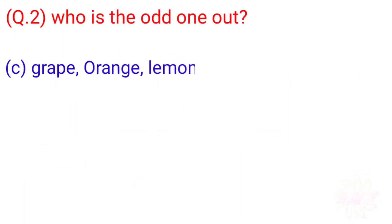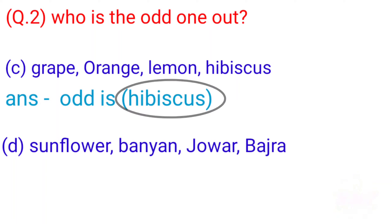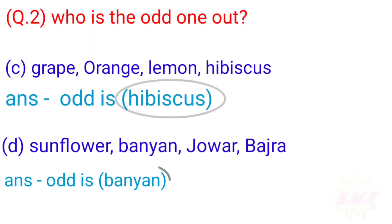C: Grape, Orange, Lemon, Hibiscus. Answer: The odd one is Hibiscus. D: Sunflower, Banyan, Jowar, Bajra. Answer: The odd one is Banyan.